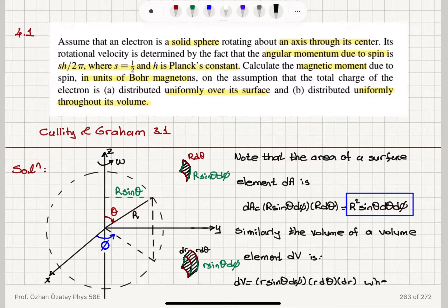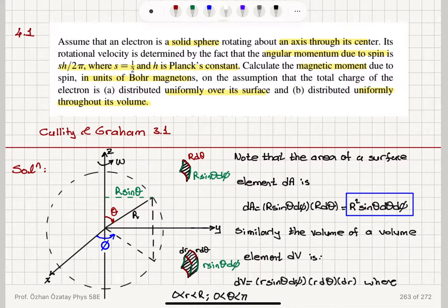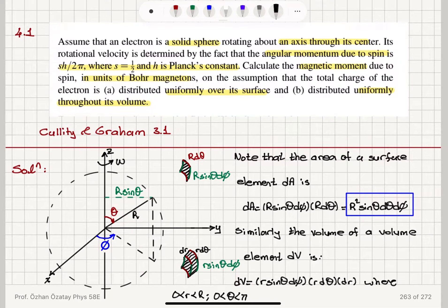To cover the full volume, the radial coordinate r varies from 0 to R, the polar angle θ varies from 0 to π defining a slice, and the azimuthal angle φ varies from 0 to 2π to rotate that slice and cover the full sphere.